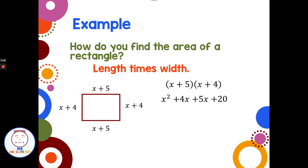I have 4x and 5x. This would combine to be 9x. And my answer, x squared plus 9x plus 20, is the area of the rectangle.